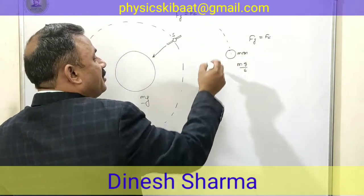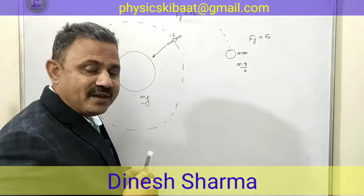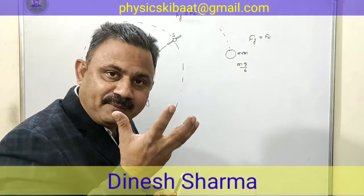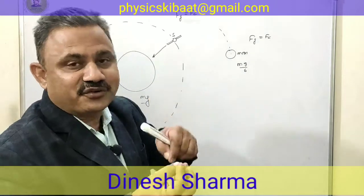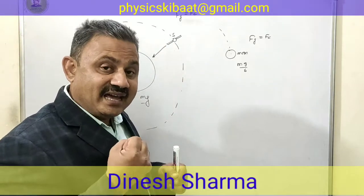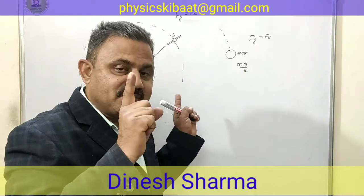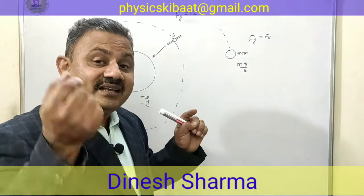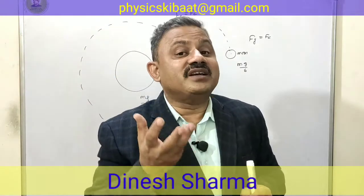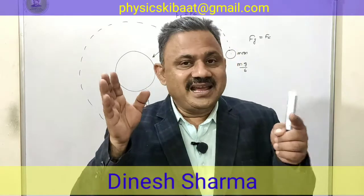Ab baat karte hain — jab Moon apne orbit mein ghoom raha hai, toh Moon ko bhi ghoomne ke liye centripetal force chahiye, aur wo gravitational force jo Earth aur Moon ke beech mein hai that is providing that necessary centripetal force. Lekin kyunki Moon ka ek significant mass hai, toh Moon aur us insaan ke beech mein bhi ek gravitational force ho raha hai. Un dono ke beech gravitational force ke karan Moon us aadmi ko apni or kheench raha hai — that means wahan par wo aadmi weight feel karega. So gravitational force of Earth is not responsible for the weight of that person; gravitational force of Earth is responsible for the motion of the Moon around Earth. Moon ke oopar us aadmi ke weight ke liye Moon ka apna gravitational force responsible hai.